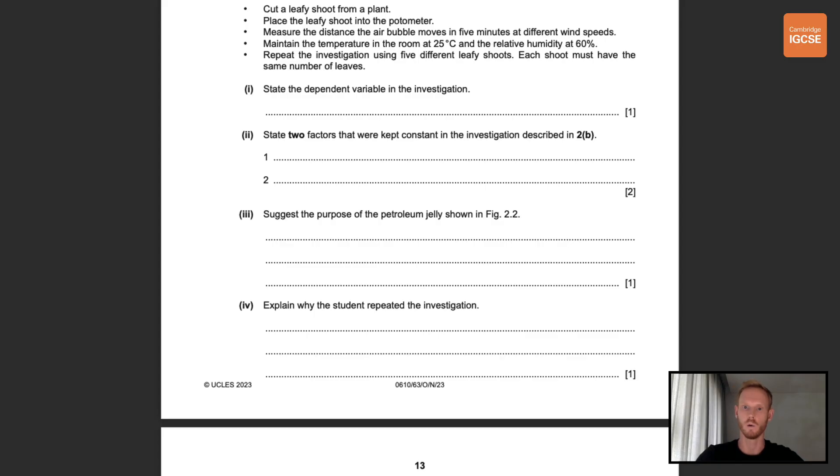Now what is the dependent variable in this investigation, the thing being measured? That is the distance the air bubble moved in five minutes. Next state two factors that were kept constant in the investigation described. We could have gone for number of leaves, time measured, temperature, humidity, or using the same potometer. Just make sure in your exam you read the questions carefully. All the information you need will be provided. Next suggest the purpose of the petroleum jelly shown in figure 2.2. So petroleum jelly has been placed around the stem. Given that we're measuring water loss from the leaves, it's fairly obvious that this is to prevent any additional water loss from around the stem. Next explain why the student repeated the investigation. Repeats are important as they help us to identify anomalous results.